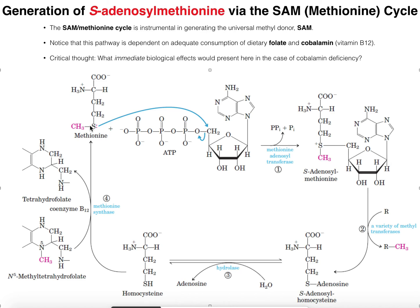This pathway, and in particular methionine synthase, is going to be very dependent on adequate intake of folate and vitamin B12 (cobalamin). If you are deficient in either one of these molecules, the reaction of methionine synthase is going to suffer, and you're going to lose out on the synthesis of methionine. And that's very bad, because if you lose out on methionine synthesis you also lose out on the synthesis of S-adenosylmethionine — SAM — and your ability to methylate things will drop substantially.